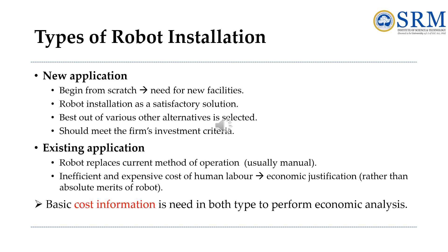There are two basic categories of robot installations that are commonly encountered. The first involves a new application, where there is no existing facility. The second situation is the robot installation to replace the current method of operation. The present method typically involves a production operation that is performed manually, and the robot would be used to substitute for the human labor. In either of these situations, certain basic cost information is needed in order to perform the economic analysis.